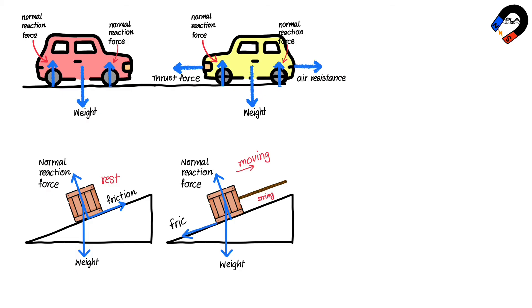friction acting downward parallel to the slope (because the box is moving up the slope), and tension acting up along the slope as shown.